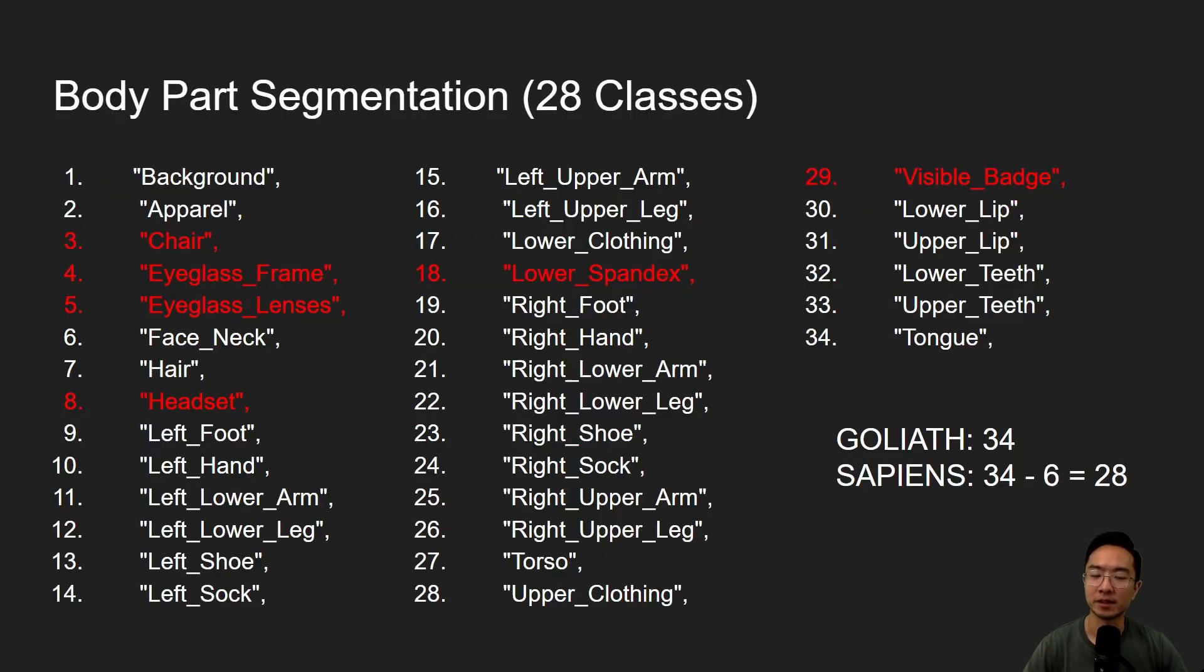So body part segmentation. So with the body part segmentation, what we're dealing with is 28 classes. So they base it off of the Goliath, which has 34 classes, but they took out six classes. So the chair, eyeglass frame, eyeglass lenses, headset, lower spandex, and visible badge. They took out those six classes and that's how we get the 28.